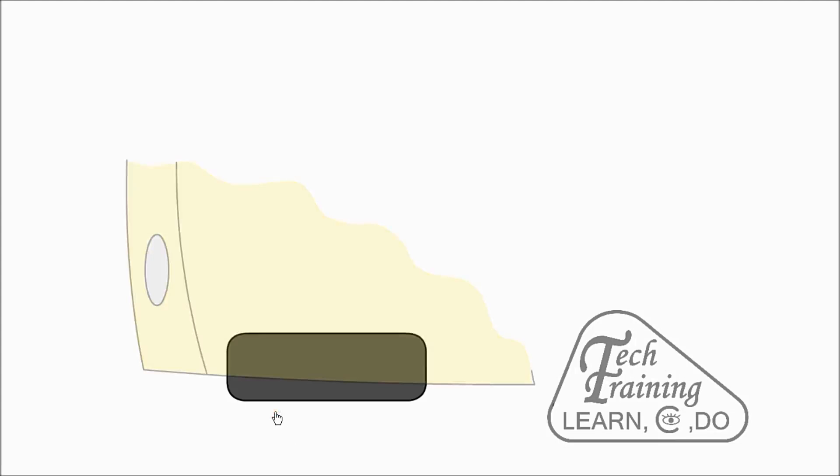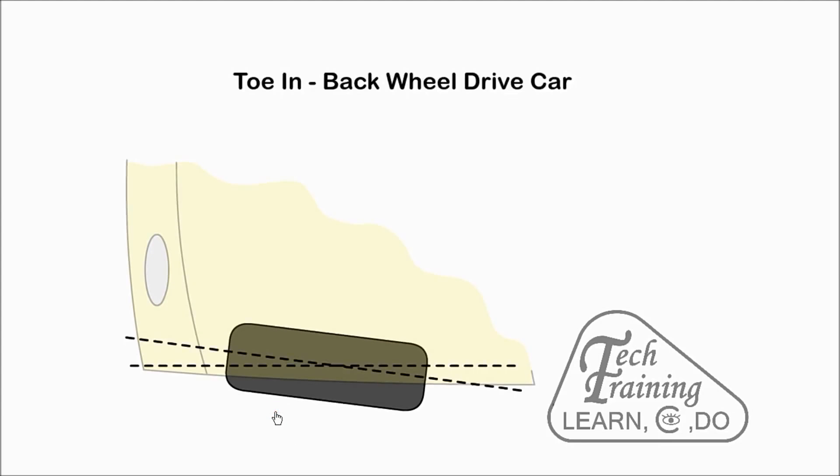With toe in, the front of the wheels are set slightly towards each other. This is normally used on a rear wheel drive car. When the back wheels drive the car, the front wheels will tend to splay out or straighten as any slack in the steering system is taken up.